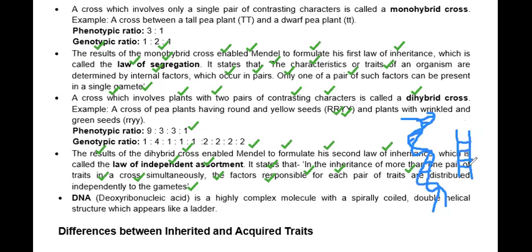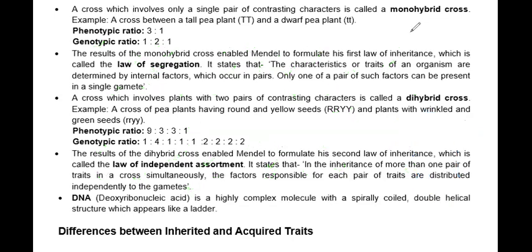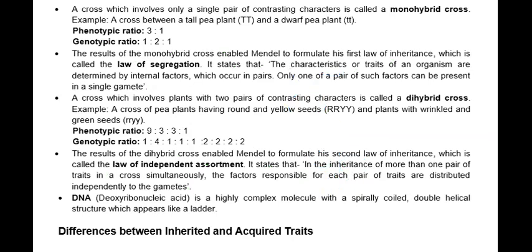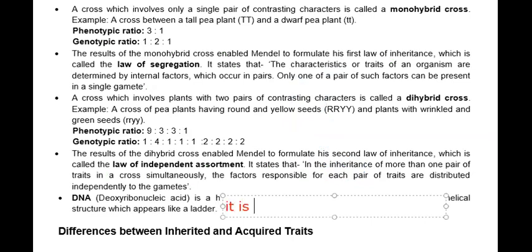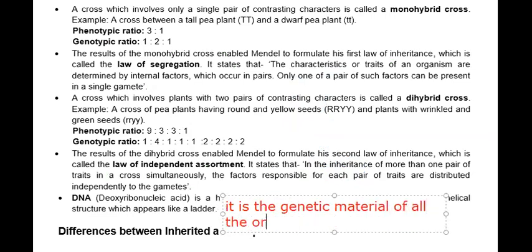If you have to write about DNA: DNA is a highly complex molecule with a spirally coiled — meaning S-shape coiled — double helical structure, meaning two strands that are helical in shape. It is the genetic material of all organisms.